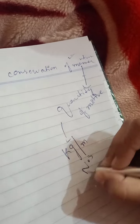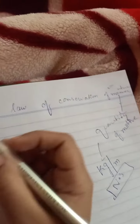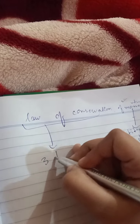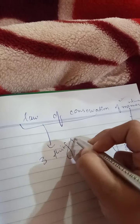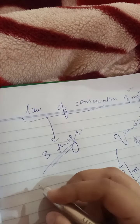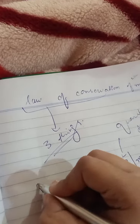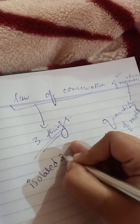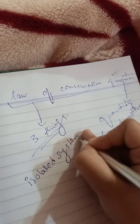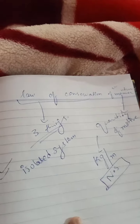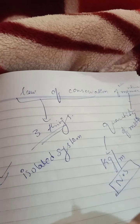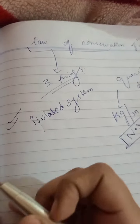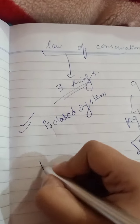The unit of momentum is kilogram meter per second, or you can say Newton into second. The law of conservation of momentum depends upon three things: number one is the isolated system, number two is elastic and inelastic, and number three is the change in momentum. First we will be discussing about the isolated system.